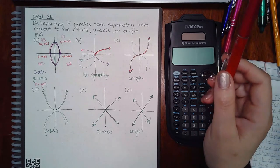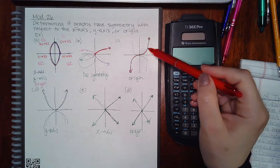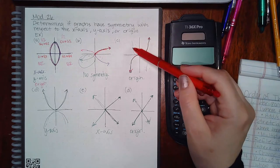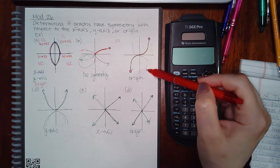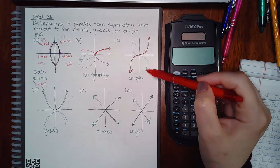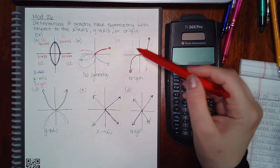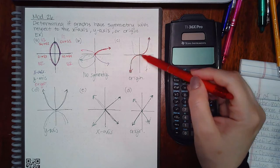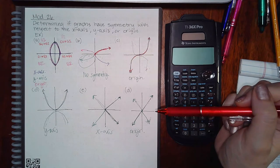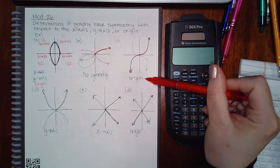Now doing both flips: if I flip over the y-axis I get this, then flip over the x-axis — this part of the arc flips up here and this part flips down there. That does land onto the original graph, so therefore this graph does have symmetry with respect to the origin.